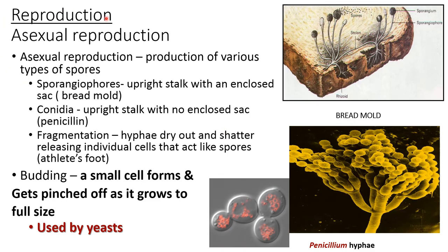Reproduction in fungi is of two types: sexual and asexual. In asexual reproduction, various types of spores are produced. First is sporangiophores — the stalk is upright with an enclosed sac in which spores are present; an example is bread mold. The second is conidia — the stalk is upright with no enclosed sac; an example is Penicillium.